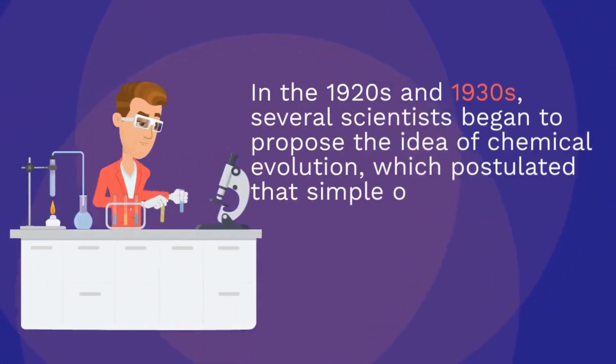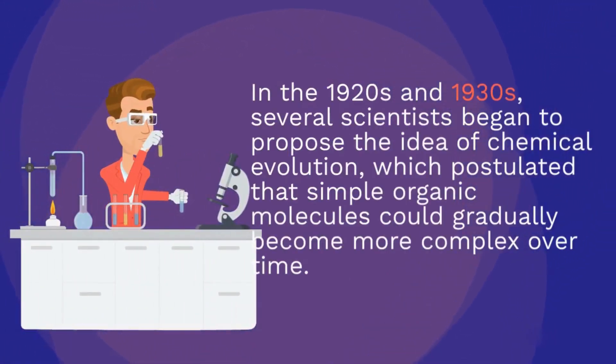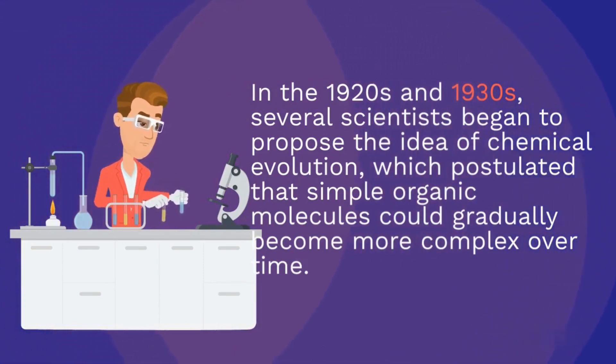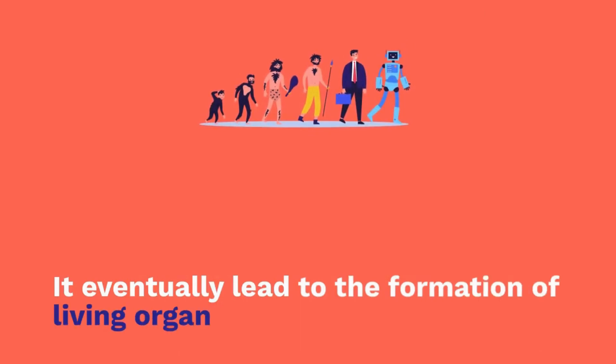In the 1920s and 1930s, several scientists began to propose the idea of chemical evolution, which postulated that simple organic molecules could gradually become more complex over time, eventually leading to the formation of living organisms.